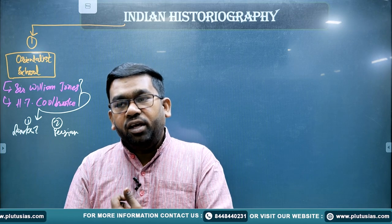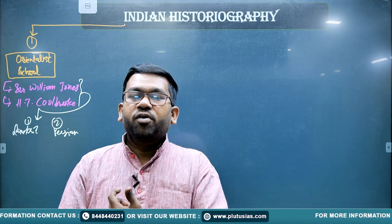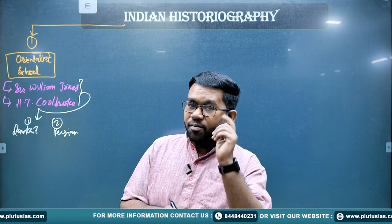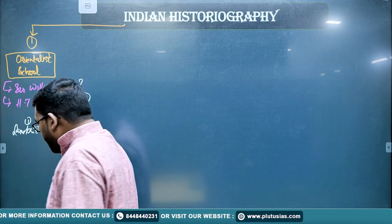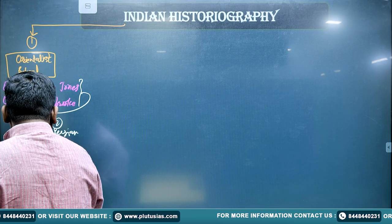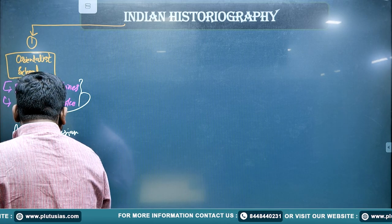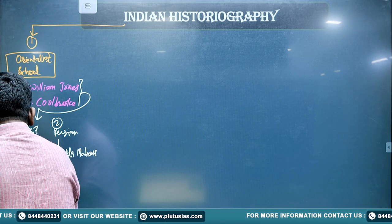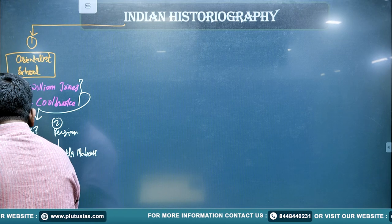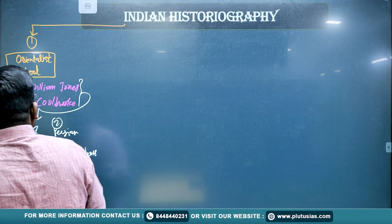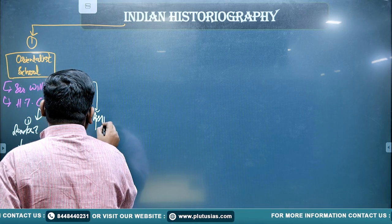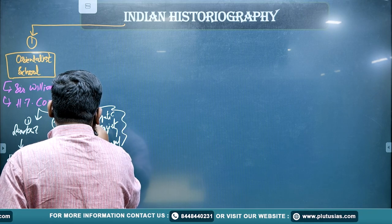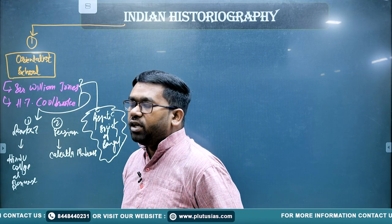The Orientalists believed that in order to rule India, they needed to understand India. For that purpose, they focused on reading about Indian cultures and customs and promoted Orientalist education in India. For this purpose, they also opened colleges — one college called Calcutta Madrasa was opened in the 1780s, and the Hindu College was opened in Banaras. Most importantly, Sir William Jones opened the Asiatic Society of Bengal. So these Orientalist people focused on the promotion of Indian cultures and customs.